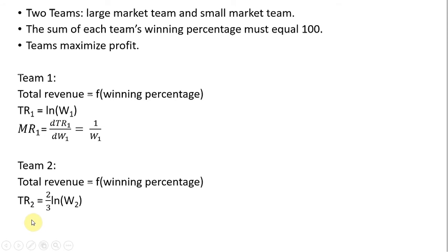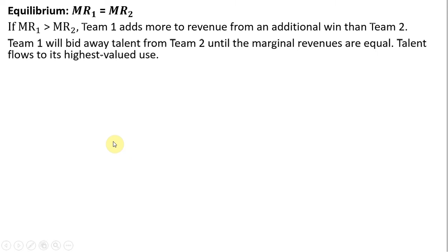Let's get marginal revenue for team 2. Marginal revenue for team 2 will look like this, following the rules of derivatives of natural log functions. In equilibrium, the marginal revenue of each team will be equal. If this wasn't the case — for example, if the marginal revenue of team 1 exceeds the marginal revenue of team 2 — team 1 adds more revenue from an additional win than team 2, so team 1 will bid away talent from team 2 until the marginal revenues are equal. Talent flows to its highest valued use.